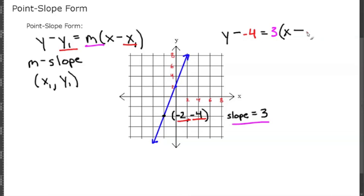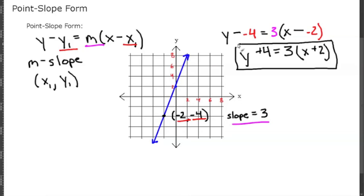So simplifying this, it would be y minus negative 4 is plus 4, equals 3 times x minus a negative 2, which would be like adding 2.